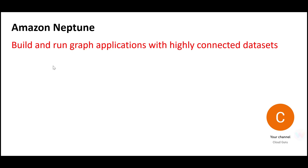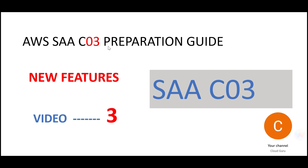Welcome to this part, where we will look at Amazon Neptune. This is a graph database designed for highly connected data sets. This is part three of the SAA-C03 preparation, where we are looking at some of the new features. Please remember all of my previous playlists on AWS SAA-C02 are still valid — you can refer to those questions because the old topics have not changed; they have just added some new features.